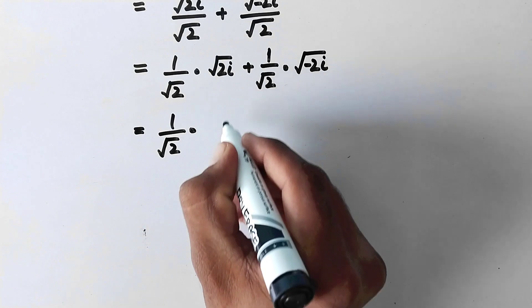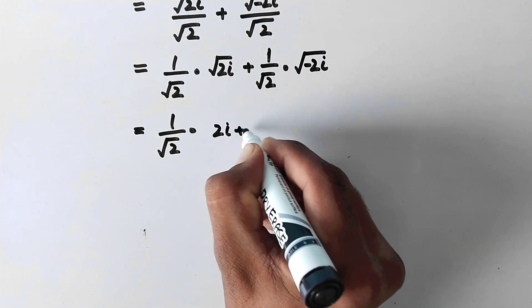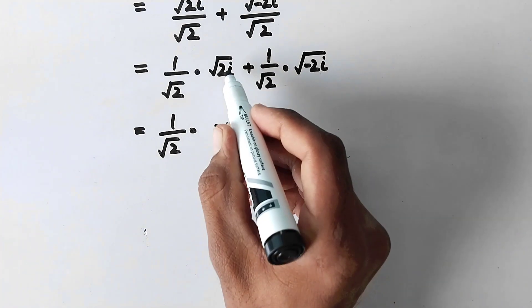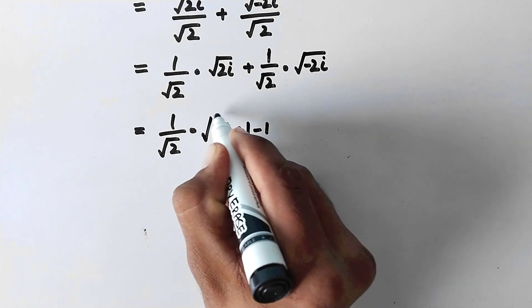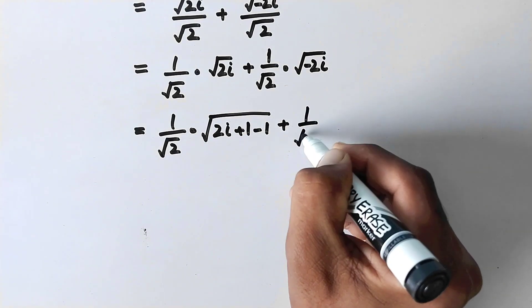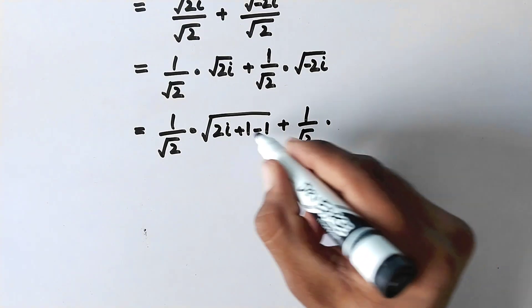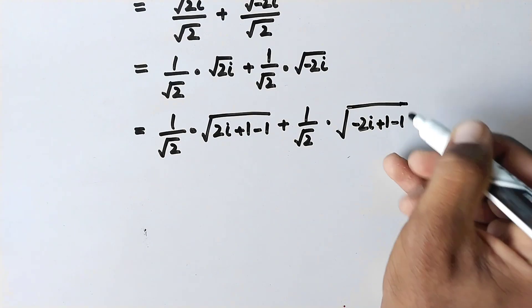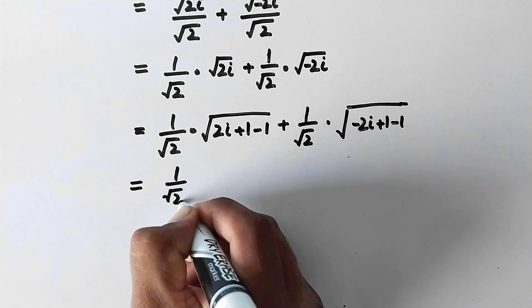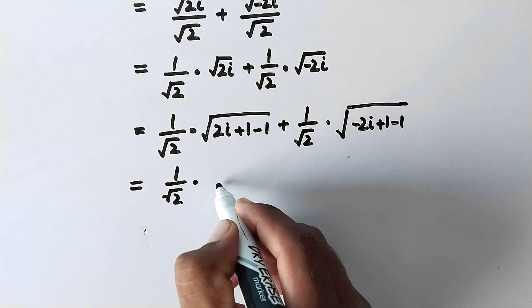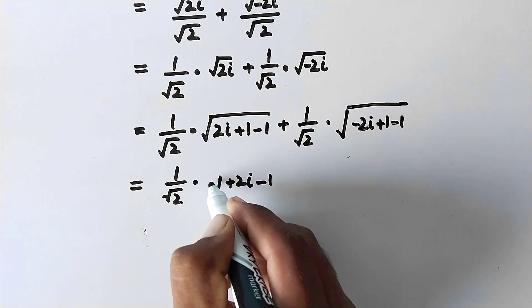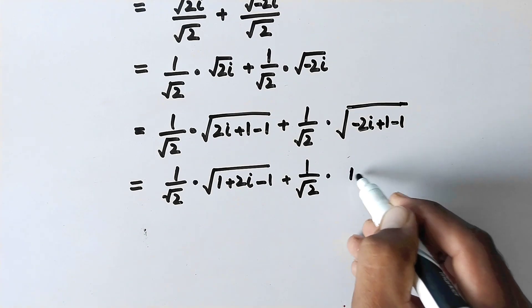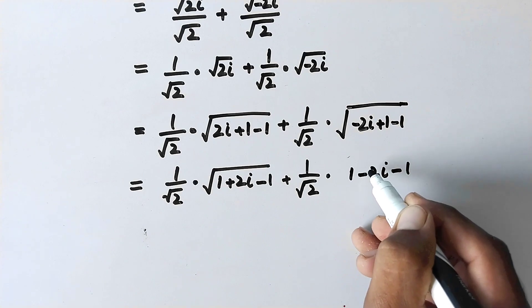We can expand 2i by adding plus 1 and subtracting 1, so there is no effect on this value. This whole value is under root, plus 1 over square root of 2 times. Here we can also write minus 2i plus 1 minus 1 under root. In the next step, by rearranging these values, we can write 1 over square root of 2 times the square root of 1 plus 2i minus 1, plus 1 over square root of 2 times the square root of 1 minus 2i minus 1.